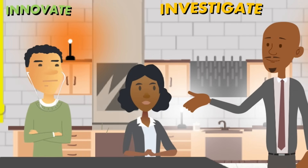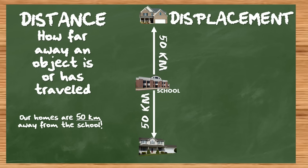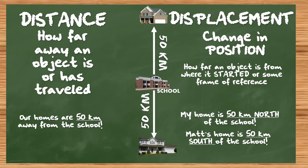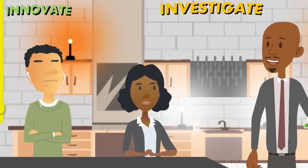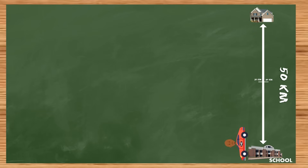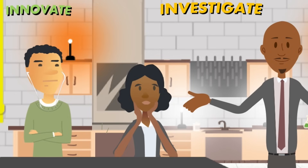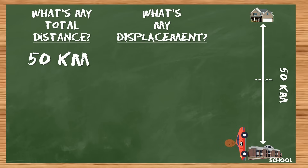Our displacement is different. Displacement is the change in position of an object — how far away it is from its starting point in a certain frame of reference. Here's the school. I live 50 kilometers north of the school. When I arrive to school, what is the distance that I've traveled? 50 kilometers. What is my displacement relative to my house? 50 kilometers south.